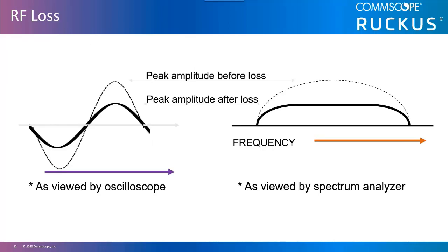RF loss. Loss is a decrease in the signal strength and can be caused by a number of things, such as diffusion, which occurs naturally as the wave travels away from the signal source, and attenuation, which occurs as the RF signal reacts to its physical environment.